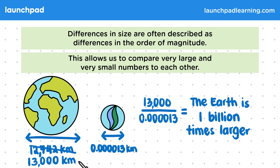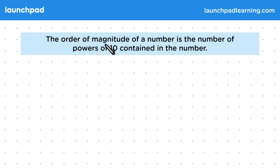Using estimates like this is something that we do naturally all the time. So how do we define order of magnitude? The order of magnitude of a number is the number of powers of 10 contained in the number. Differences in the order of magnitude are calculated in factors of 10 — for example, we would say something is 10 times bigger or 100 times smaller.